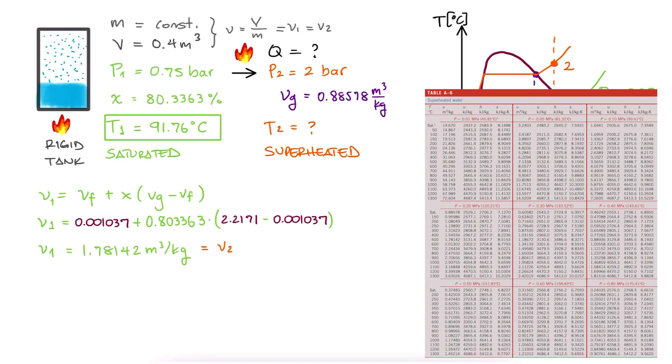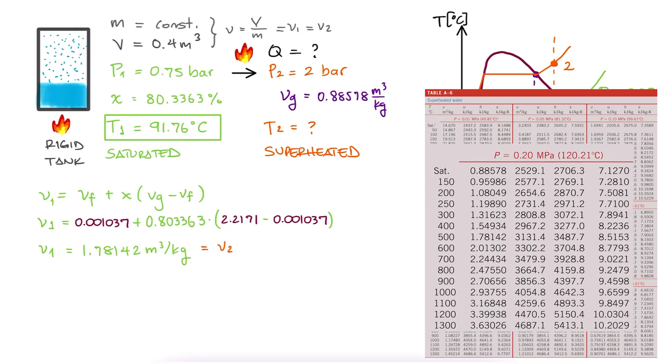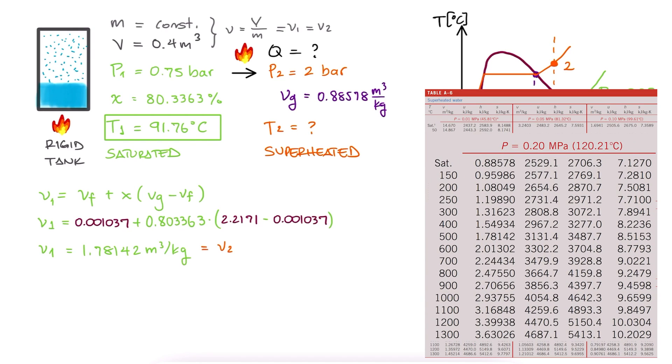We go to our superheated tables, look for a pressure of 2 bar, 200 kilopascals, or 0.2 megapascals, to find that for a specific volume of 1.78142, the temperature is 500°C, and that is T2.